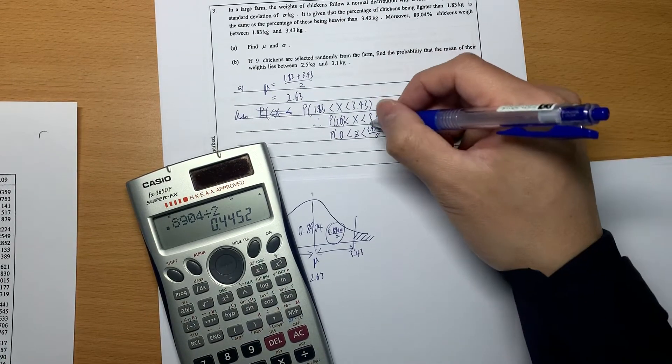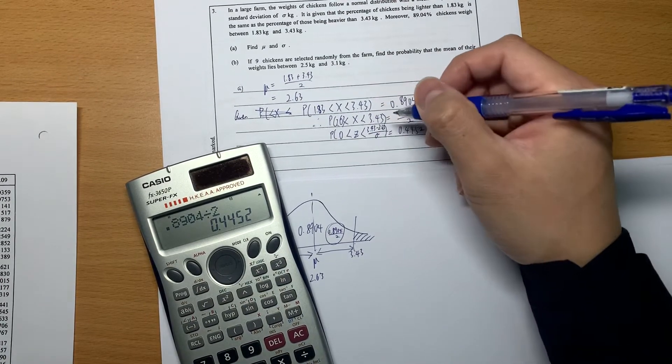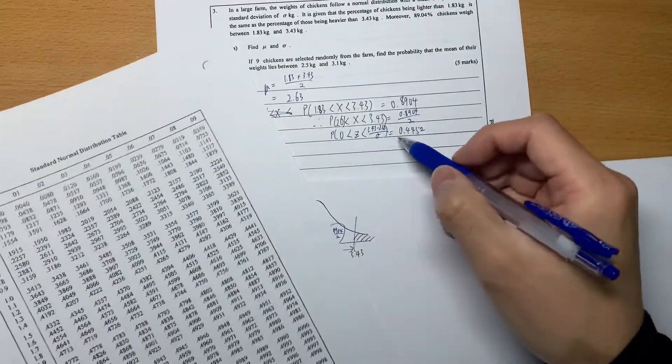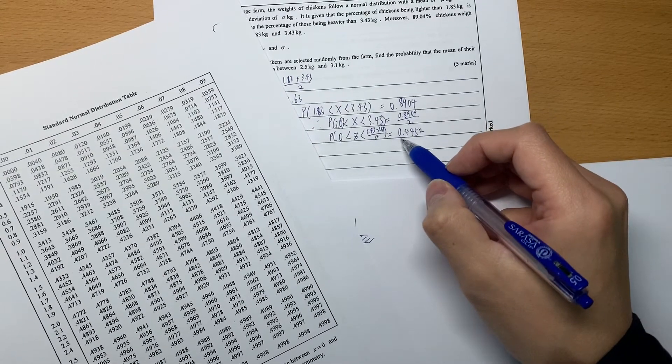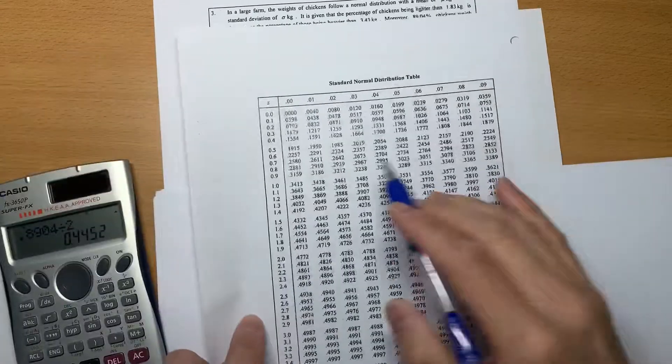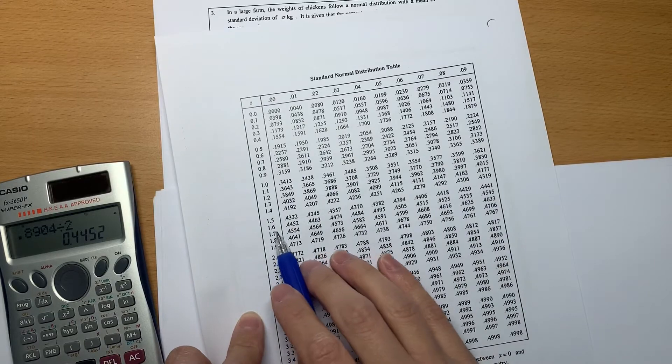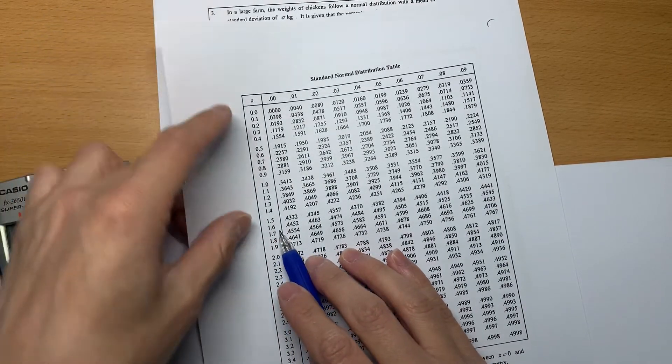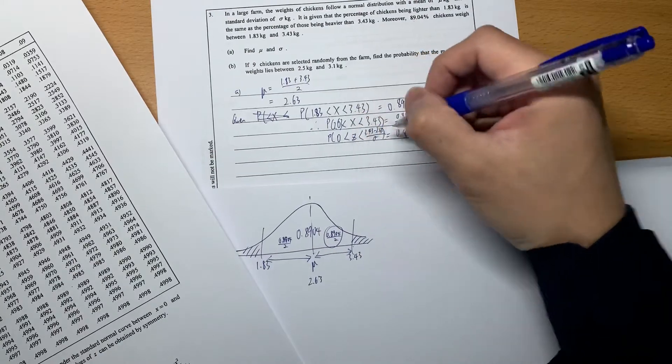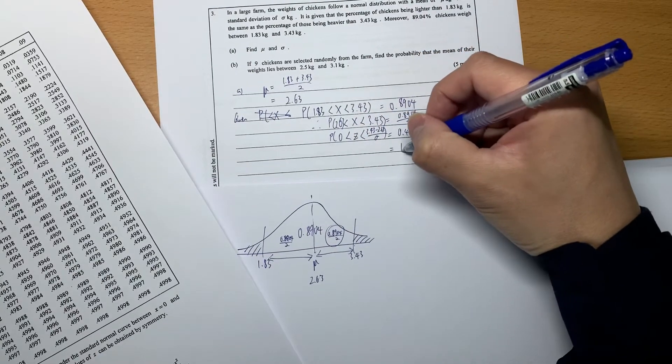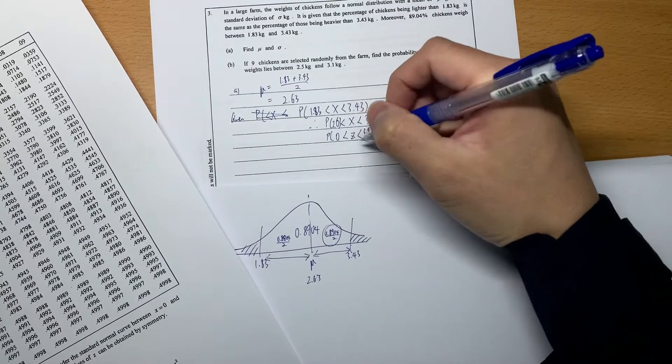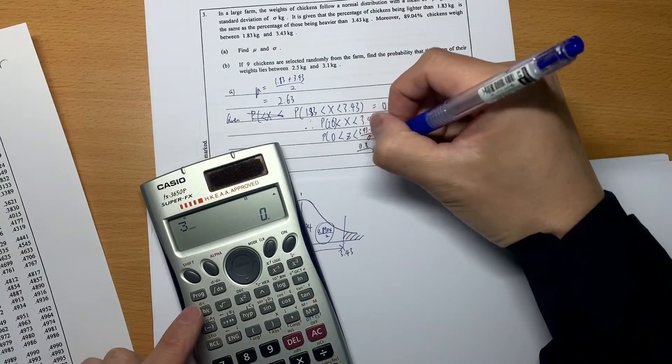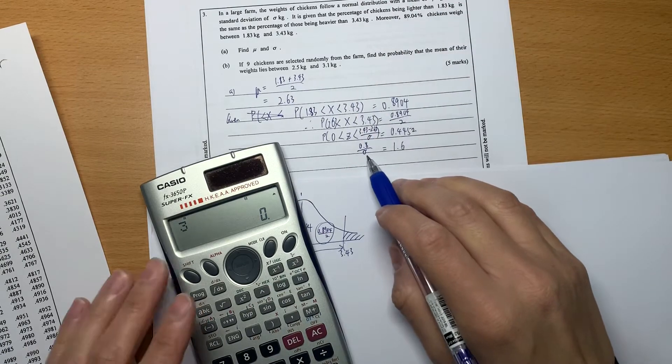After this, by using the table, we can transform it. We are searching which area will give us exactly 0.4452. We search here. 0.4452 is when the standard score is 1.60. When the standard score equals 1.6, that means 0.8 divided by σ. This is the standard score.